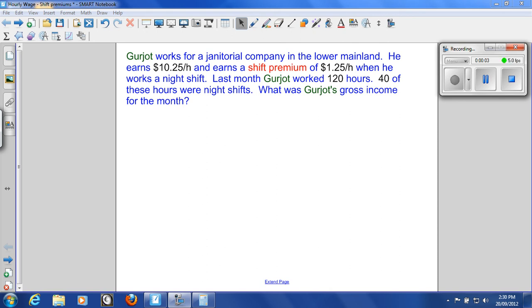Gurjot works for a janitorial company in the Lower Mainland. He earns $10.25 per hour and earns a shift premium of $1.25 an hour when he works a night shift. Last month Gurjot worked 120 hours, 40 of these hours were night shifts. What was Gurjot's gross income for the month?